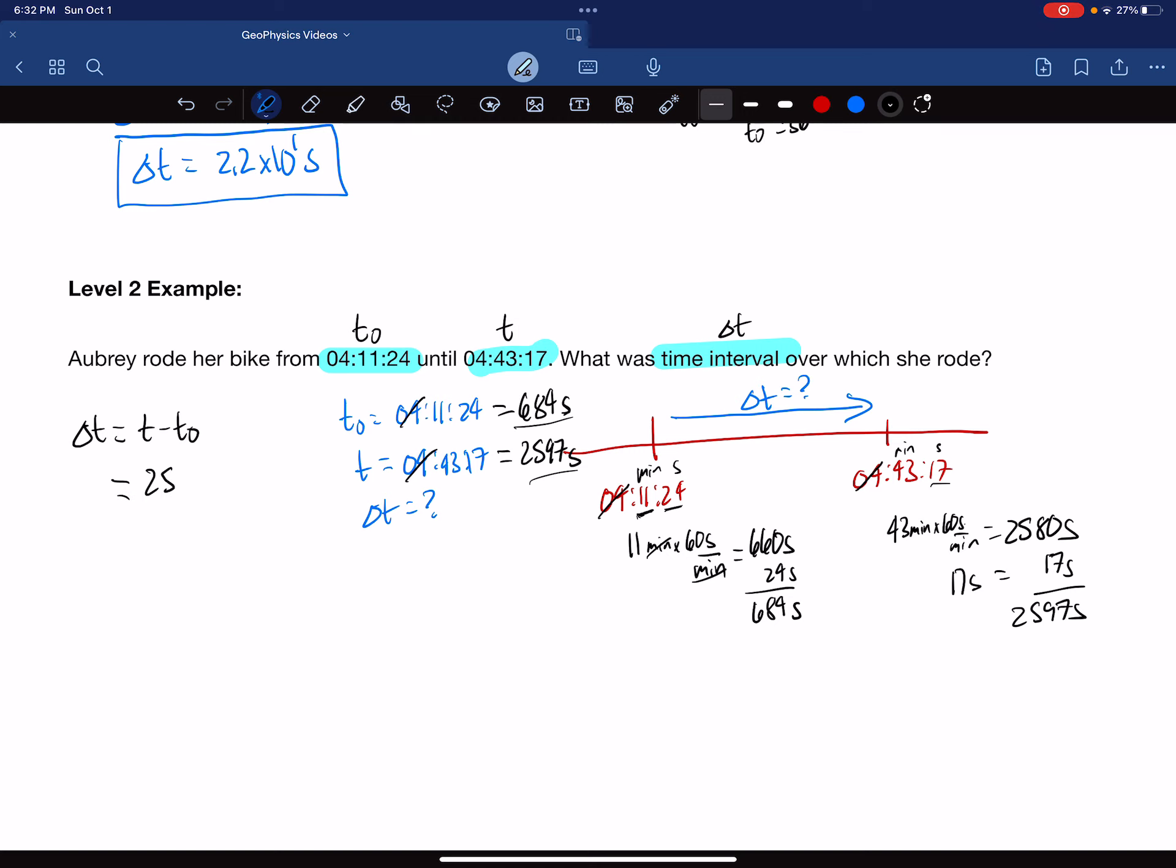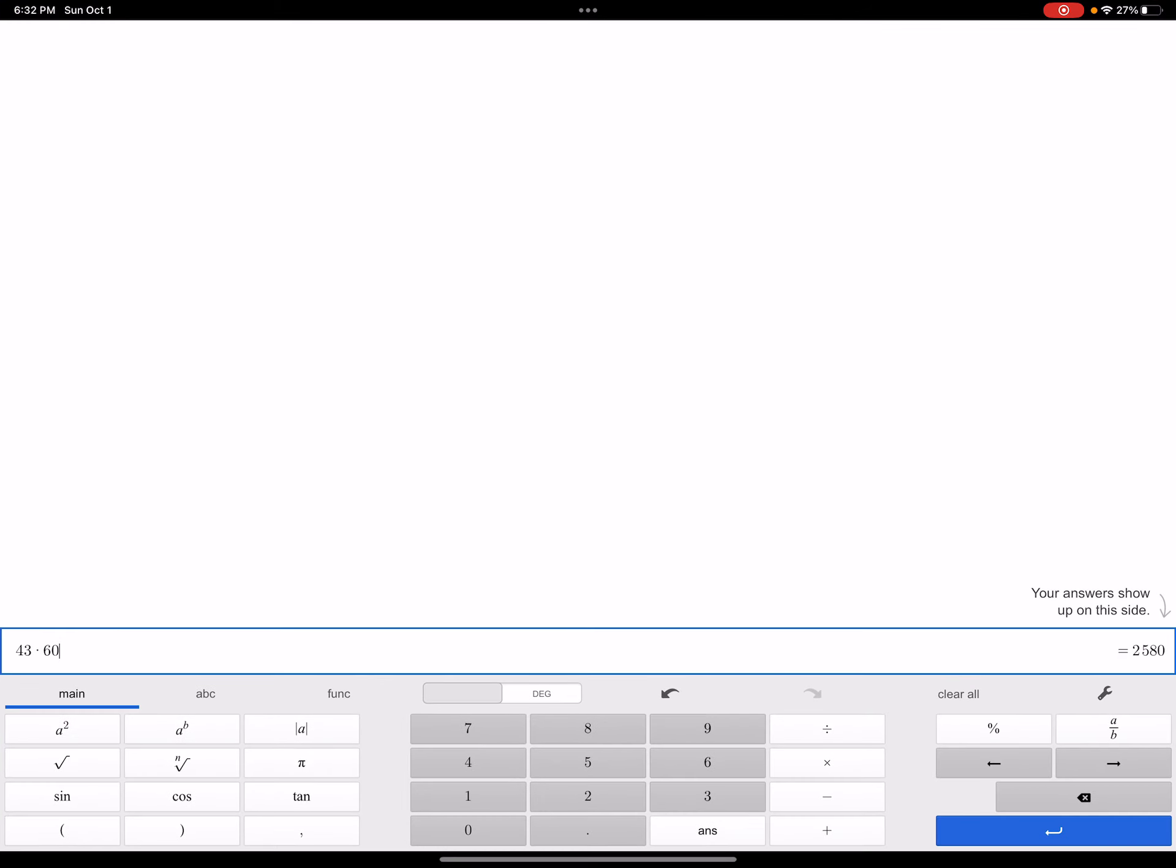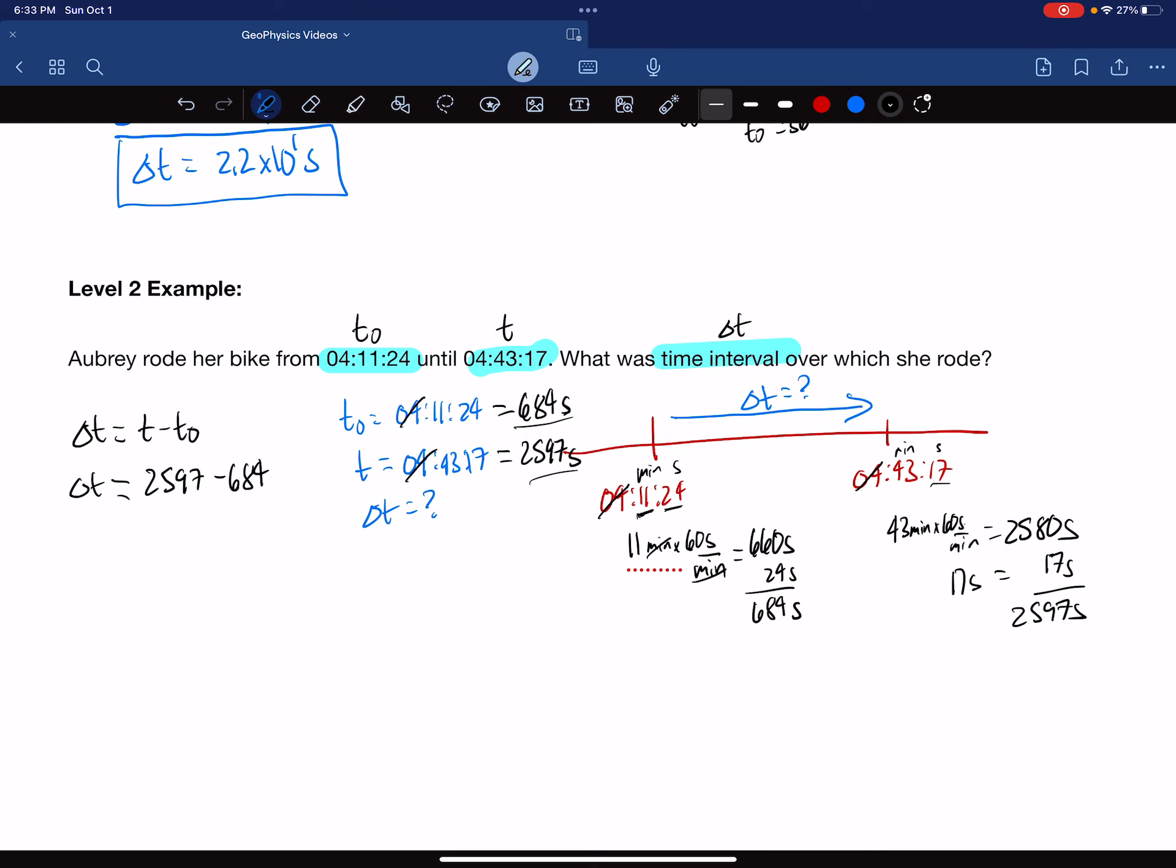Our final was 2,597 seconds, and our starting was 684 seconds. We are welcome to use a calculator. I recommend using your TI-84 calculator or Desmos Scientific. 2,597 minus 684 gives us 1,913 seconds. And that is our delta t.